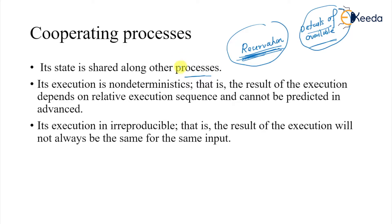The execution of cooperating processes is non-deterministic — the result depends on the relative execution sequence and cannot be predicted in advance. For example, if you are fetching how many seats are available at the same time a reservation is happening, you cannot always expect the same answer. If reservation happens first, the available seat count will show four fewer seats; if reservation happens later, it will show four more.